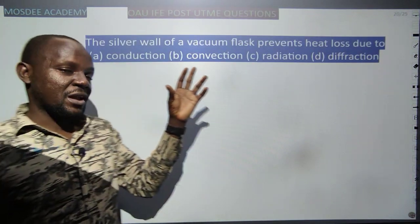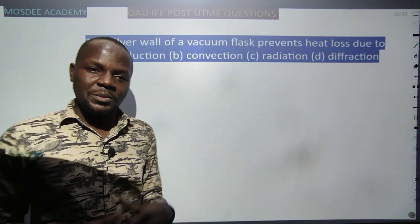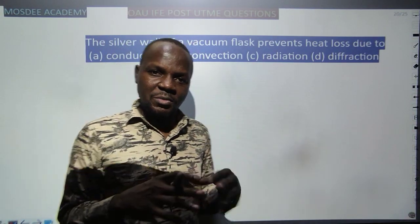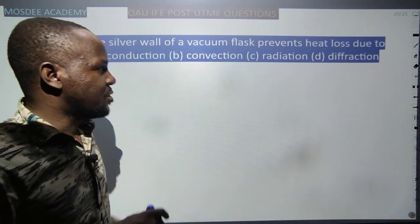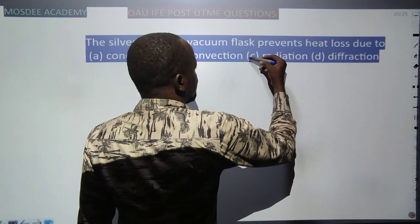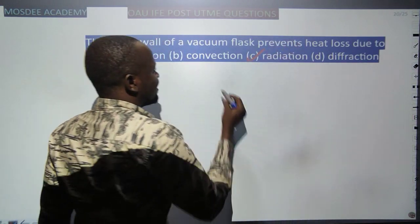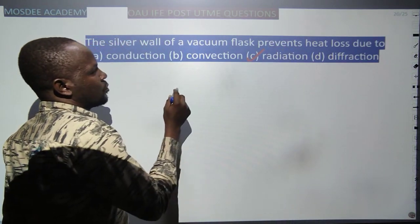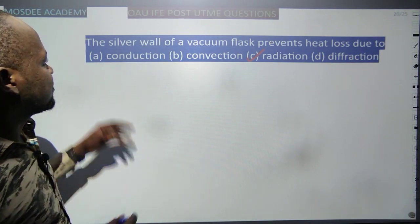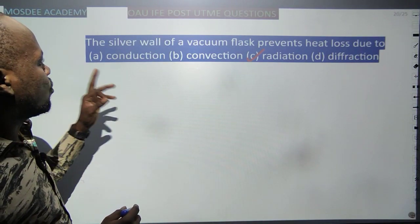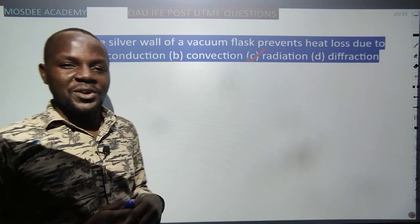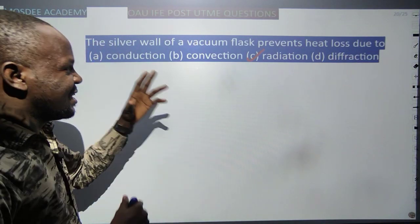The silver wall of a vacuum flask — talking about the thermos flask — prevents heat transfer by radiation. The silvered double wall prevents radiation.